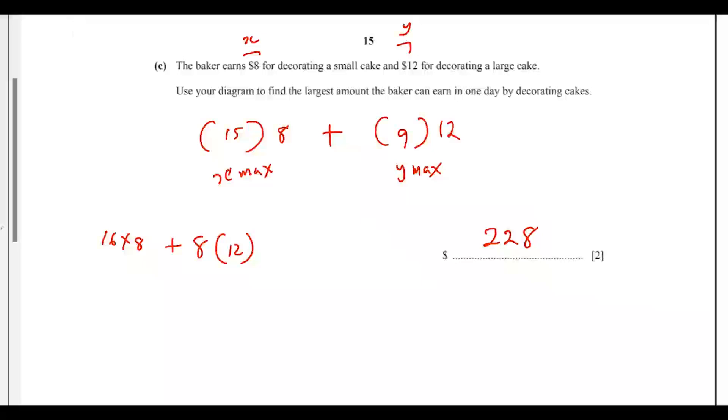Let's pick the calculator again. We can easily change the 15 to 16. Instead of 15, let's change it to 16, multiply it by 8. Then change the 9 to 8. If you hit enter, you get 224 dollars. So you can see that this is better off, giving us 228 instead of 224.